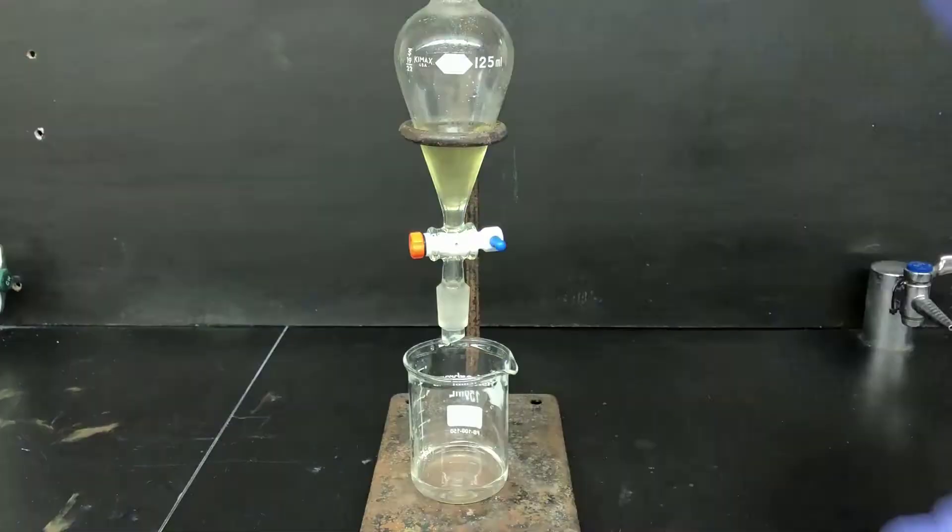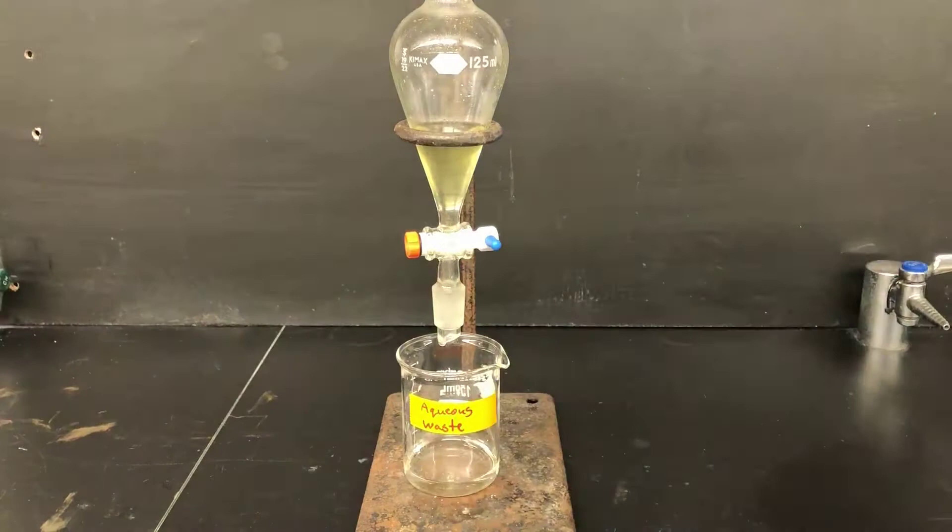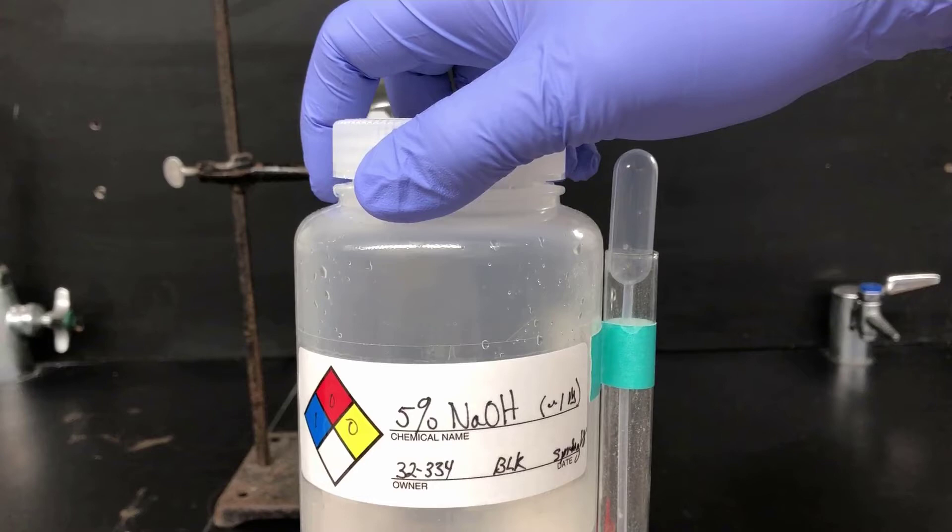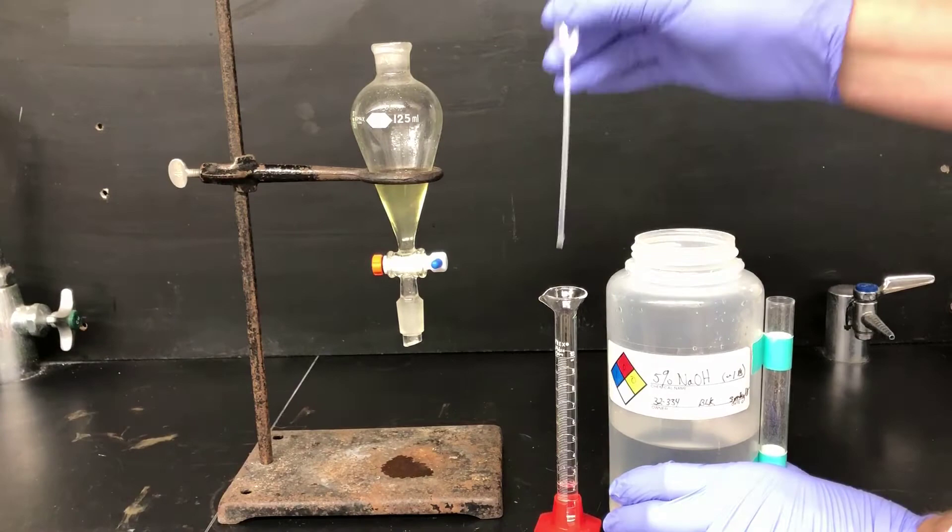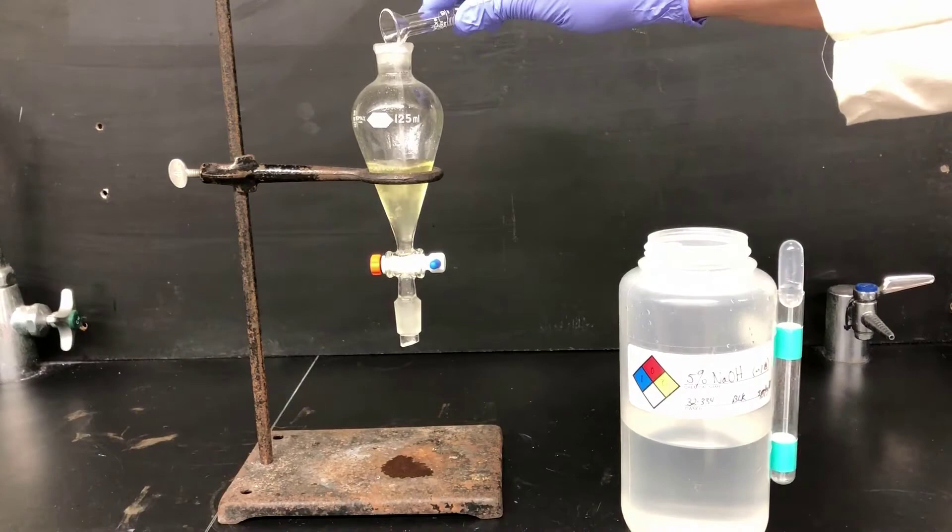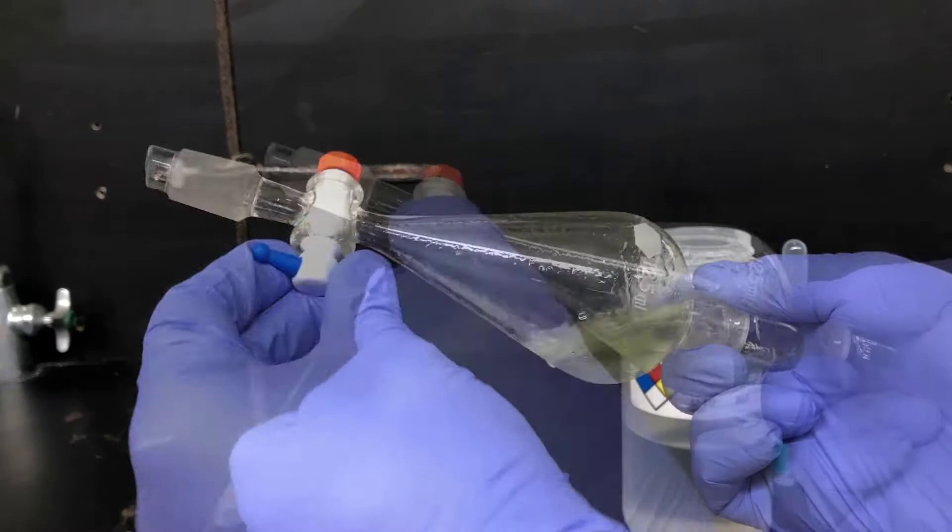To separate benzoic acid from the other organic impurities, I'm going to be extracting it using 5% aqueous NaOH, sodium hydroxide. I'm measuring out 8 milliliters of this solution, which I'll add to the separatory funnel, and then shake. Sodium hydroxide is a base that will deprotonate benzoic acid, making it into a much more polar sodium salt, so it'll migrate out of the organic layer, away from the organic impurities, and into the water layer.